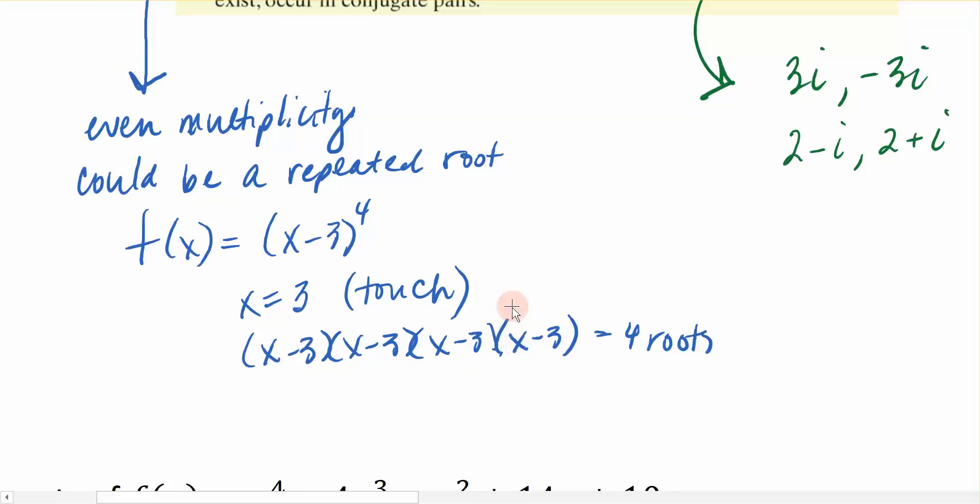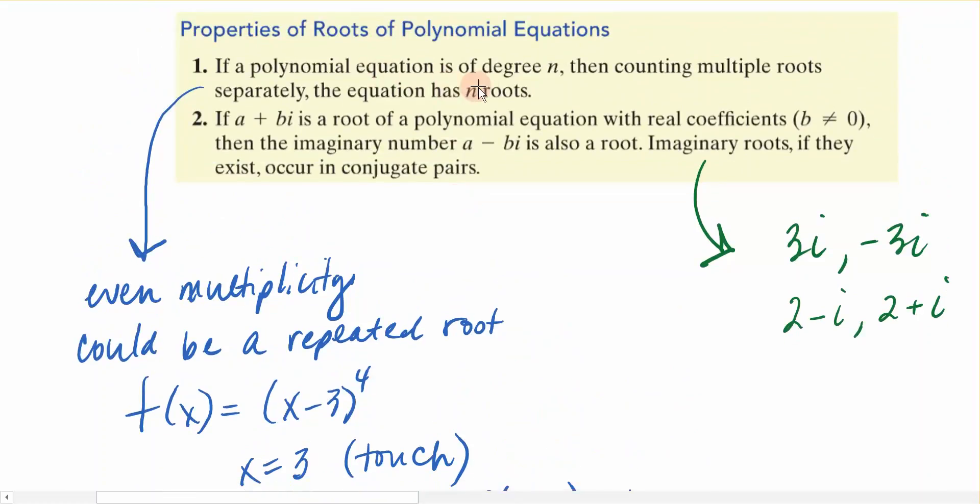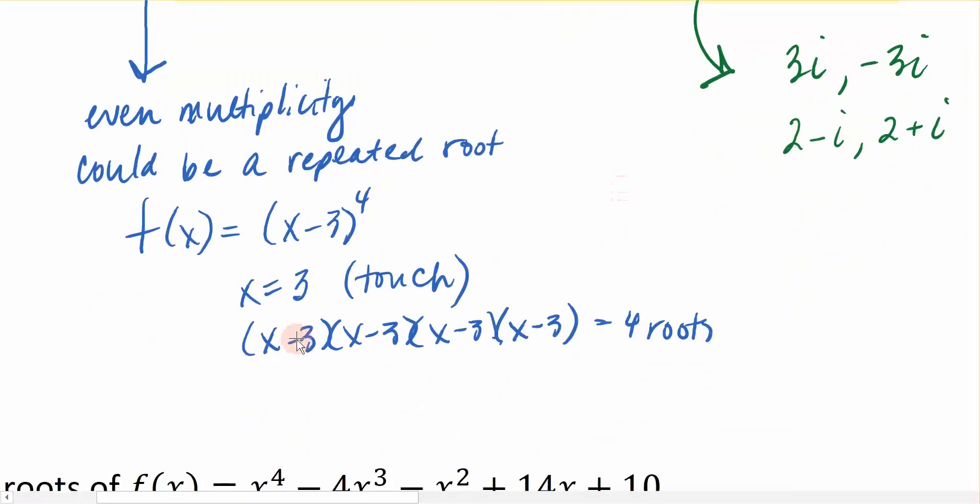That's what the first characteristic or property is implying, that just because I have a fourth degree polynomial, I technically have four roots. It's just they're all the same.